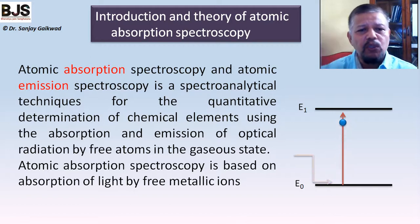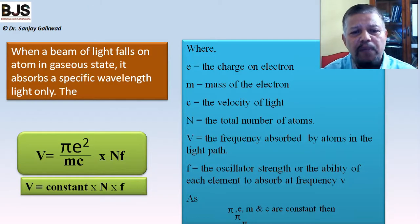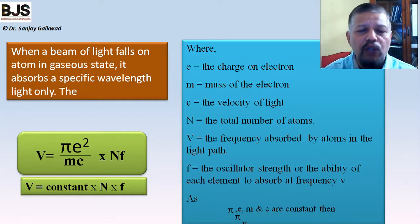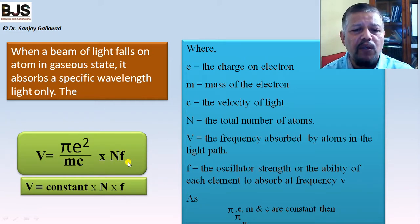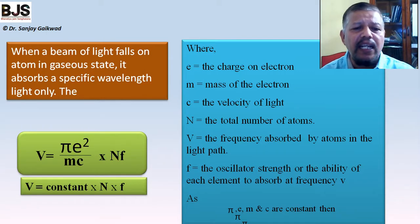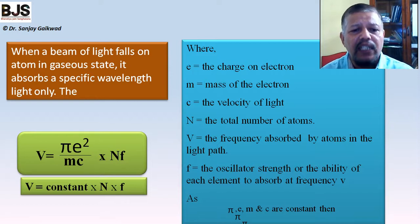When atoms reach the excited state and come back to the ground state, they emit radiation — that is the basis of emission spectroscopy. Atomic absorption spectroscopy is based on absorption of light by free metallic ions. The frequency absorbed is given by: v = (π e² / mc) × n × f, where π, e, m, c, and f are constants, n is the number of atoms in the vicinity of the radiation, and v is the absorbed frequency. Therefore v is directly proportional to n.